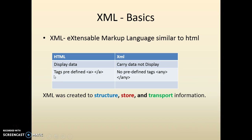With HTML, your tags are predefined. For example, if you want to create bold text you use 'B', if you want to create an anchor you use 'A', and it has an ending tag. But with XML, no tags are predefined — you can have any tags that you want. The idea behind XML is to structure, store, and transport information, whereas HTML is designed to display data.